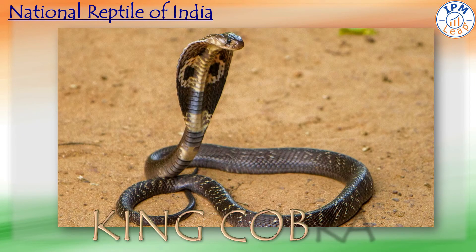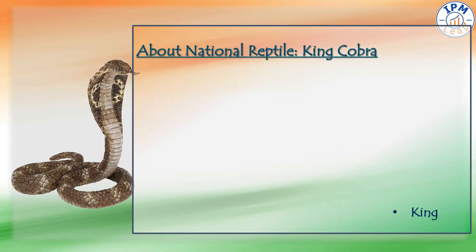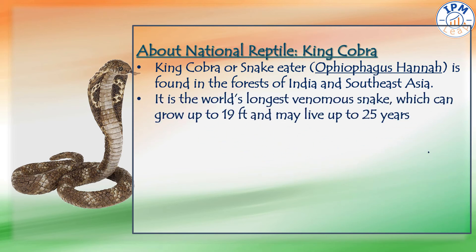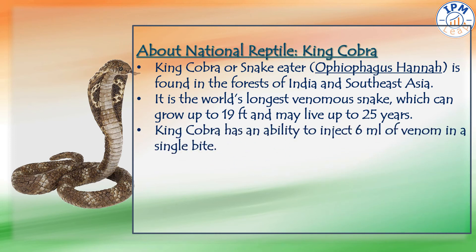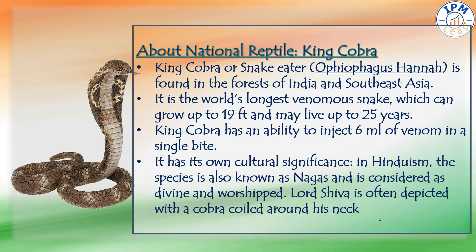The National Reptile of India is the King Cobra. The King Cobra, or Snake Eater, is found in the forests of India and Southeast Asia. It is the world's longest venomous snake, which can grow up to 19 feet and may live up to 25 years. It has the ability to inject 6 milliliters of venom in a single bite. In Hinduism, the species is known as Nagas and is considered divine and worshipped. Lord Shiva is often depicted with a cobra coiled around his neck.